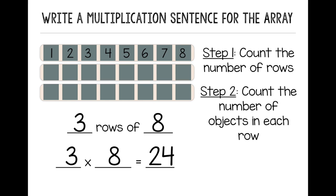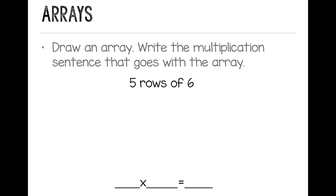Let's turn the page over and practice drawing an array. So we're going to draw the array and then write a multiplication sentence to go with it. 5 rows of 6. So you want to draw 5 rows with 6 objects in each row. First I draw 5 rows. I'm going to make 5 lines for 5 rows.